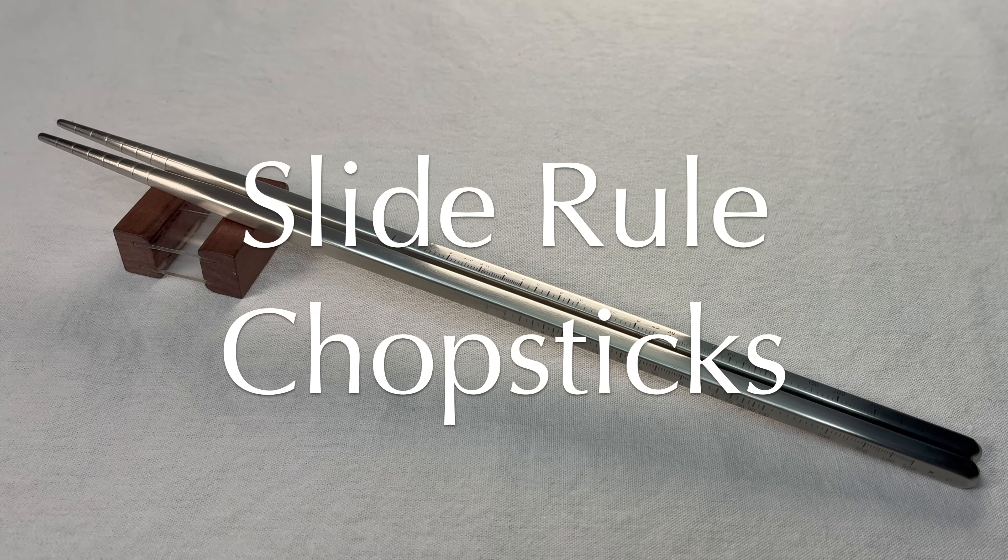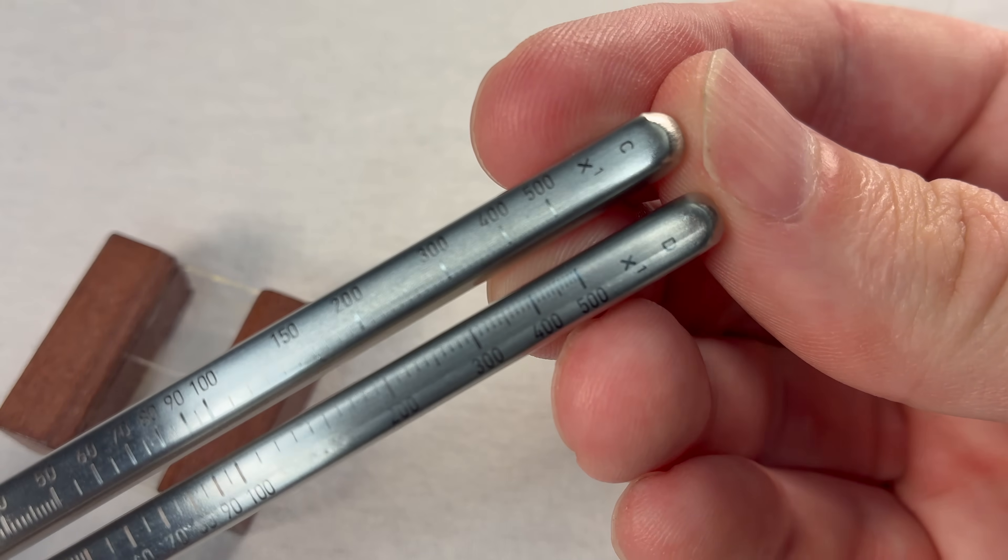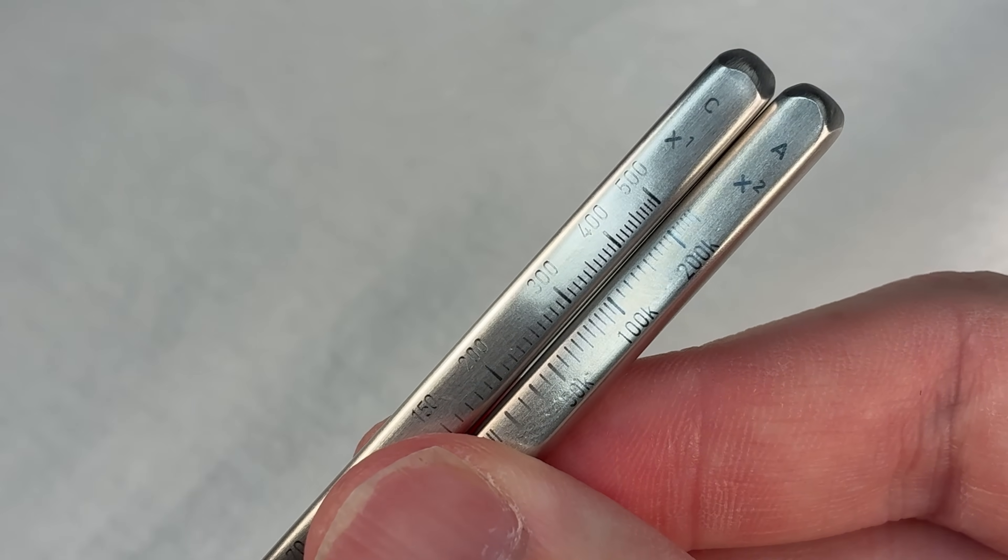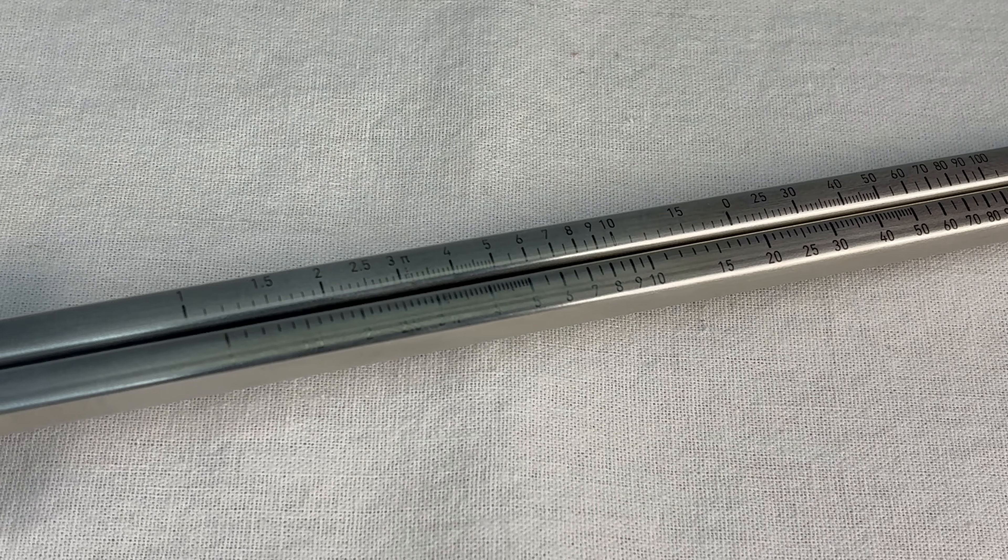This is a set of slide rule chopsticks. It has the usual C scale and D scale, and then on the back you get the A scale for squares and the K scale for cubes. Very nice, pretty fine markings on there.